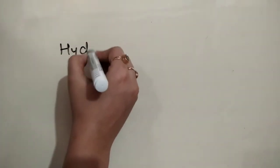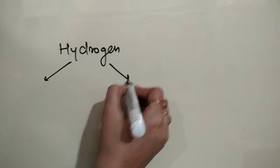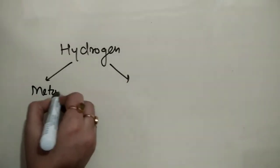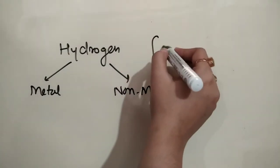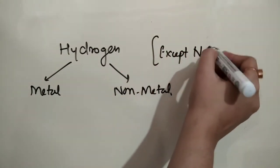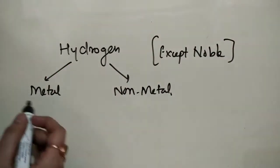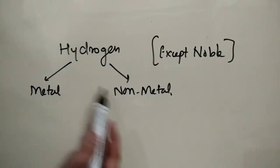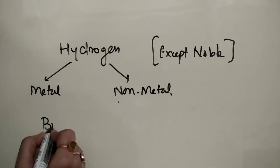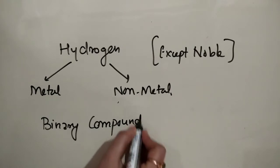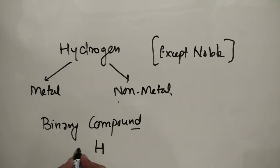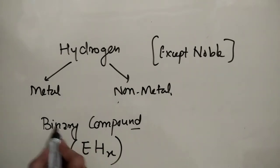Hydrogen is that element which can combine with all elements — whether it is a metal or a non-metal — except noble gases. Hydrogen combined with all elements gives a binary compound, because it contains only two things: one will be the hydrogen and the other will be the element E in EHX.